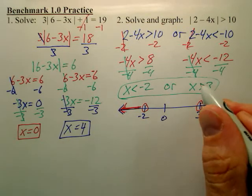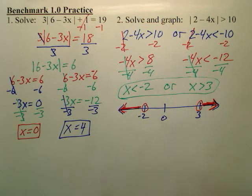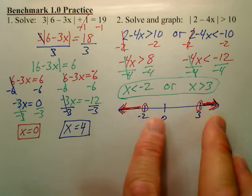And over here at 3, not including 3, it's going to the right or greater than. That's how you would graph it. Ors always go out. Ands always go together.